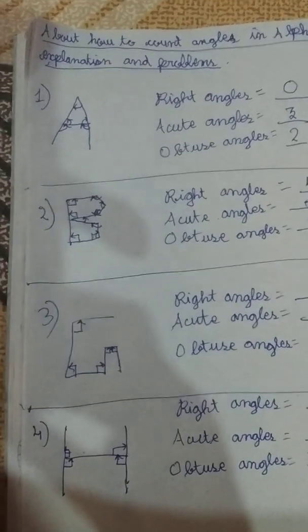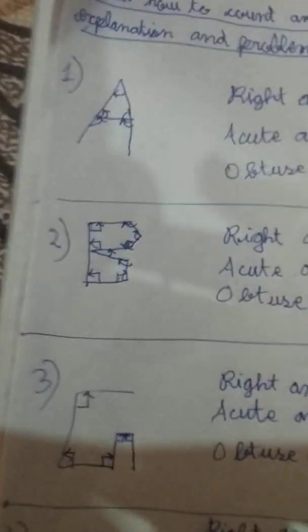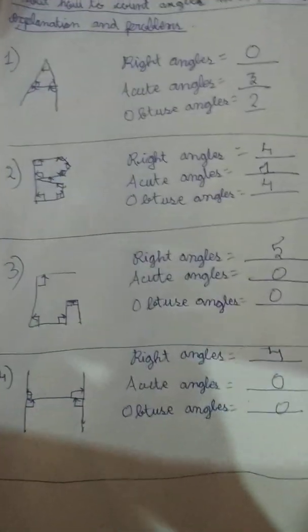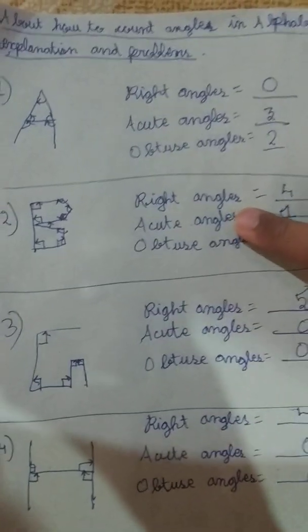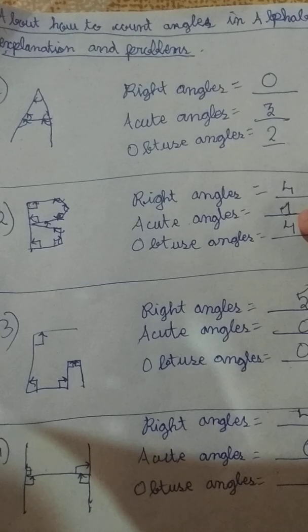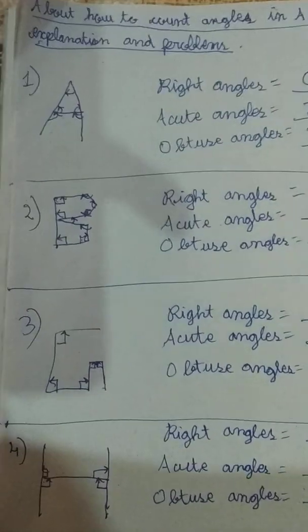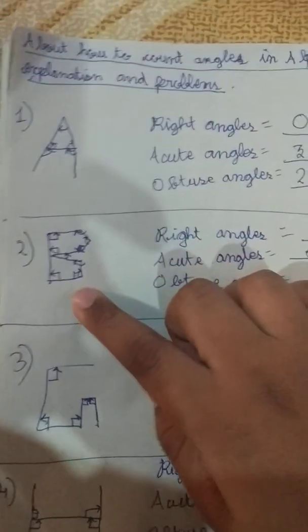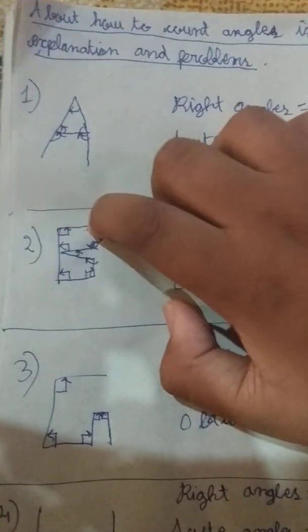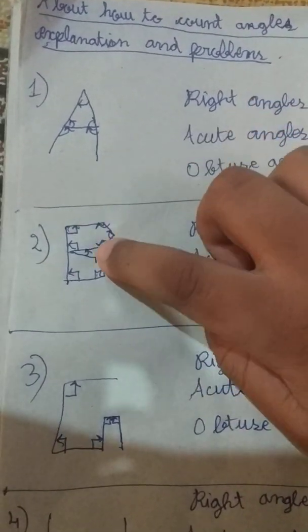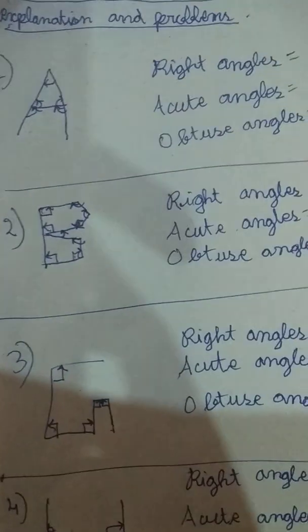Now let's see the B letter. I have written it in straight lines only. How many right angles are there in the B alphabet? How many acute angles? And how many obtuse angles? Let's count right angles. Here is one right angle, two right angles, three, and again four. That's why four right angles.